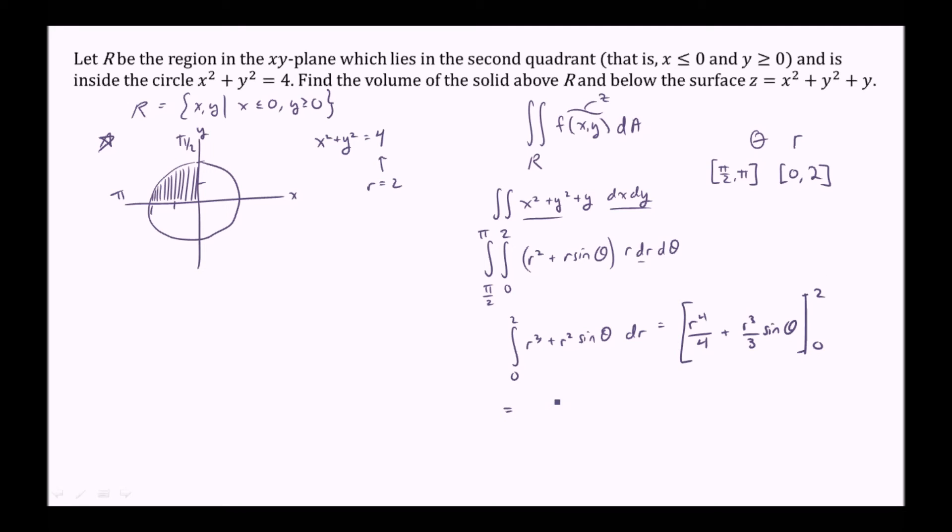This gives us 2 to the 4th, which is 16 over 4, plus 2 cubed, which is 8, divided by 3, times sin theta, minus 0. Which gives us a value of 4 plus 8 thirds sin theta.